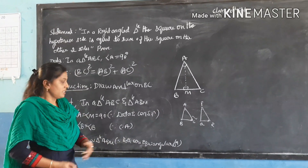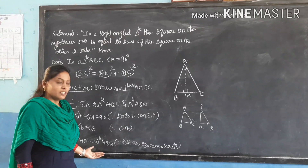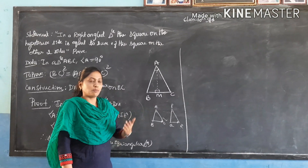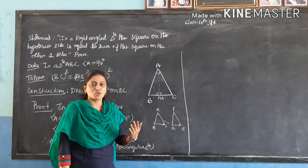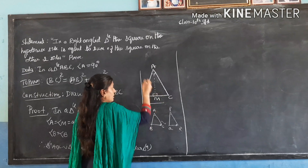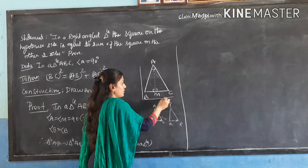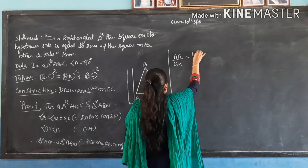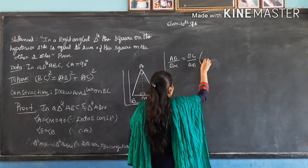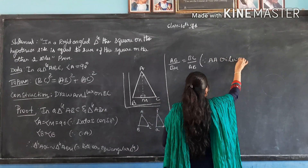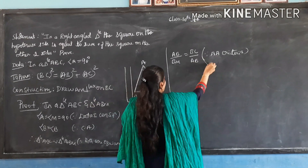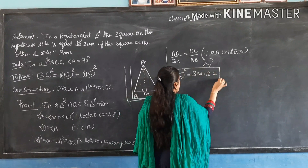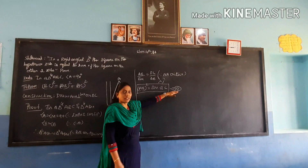Now I have to take out the corresponding properties. I have proved that those two triangles are similar. So I am going to take the corresponding properties in the shape of an L, for my convenience. AB divided by BM equals BC divided by AB, which gives AB² = BM × BC. This is because of the AA criteria. If I do the cross multiplication, AB into AB gives AB square, and BM into BC. This will be equation 1.